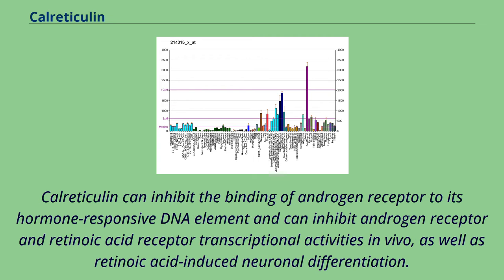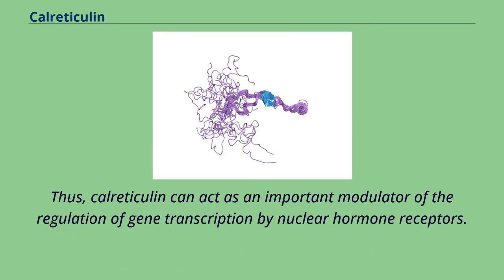Calreticulin can inhibit the binding of androgen receptor to its hormone-responsive DNA element and can inhibit androgen receptor and retinoic acid receptor transcriptional activities in vivo, as well as retinoic acid-induced neuronal differentiation. Thus, calreticulin can act as an important modulator of the regulation of gene transcription by nuclear hormone receptors.